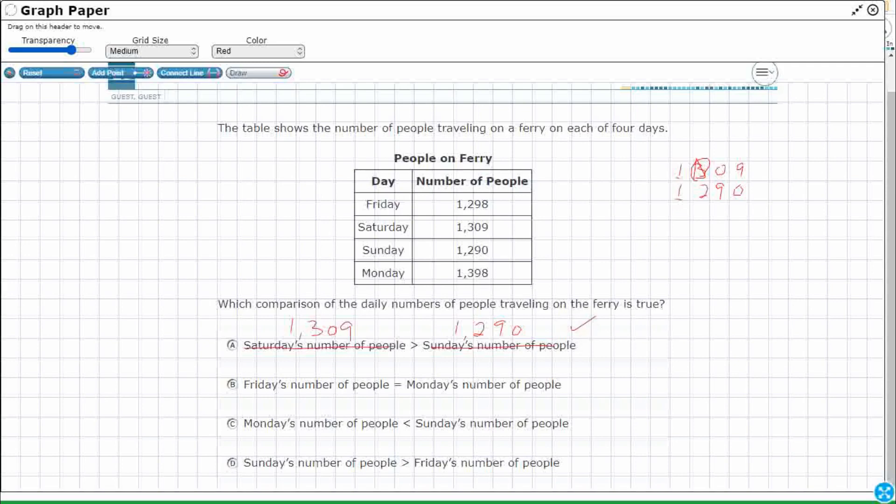Let's check all the other ones. So Friday's number of people 1,298. Monday's number of people 1,398. Yeah equal. There's no really need to compare it because as long as they're not the exact same numbers then they're not gonna be equal and the hundreds place digits are different, two and a three. So B is incorrect.